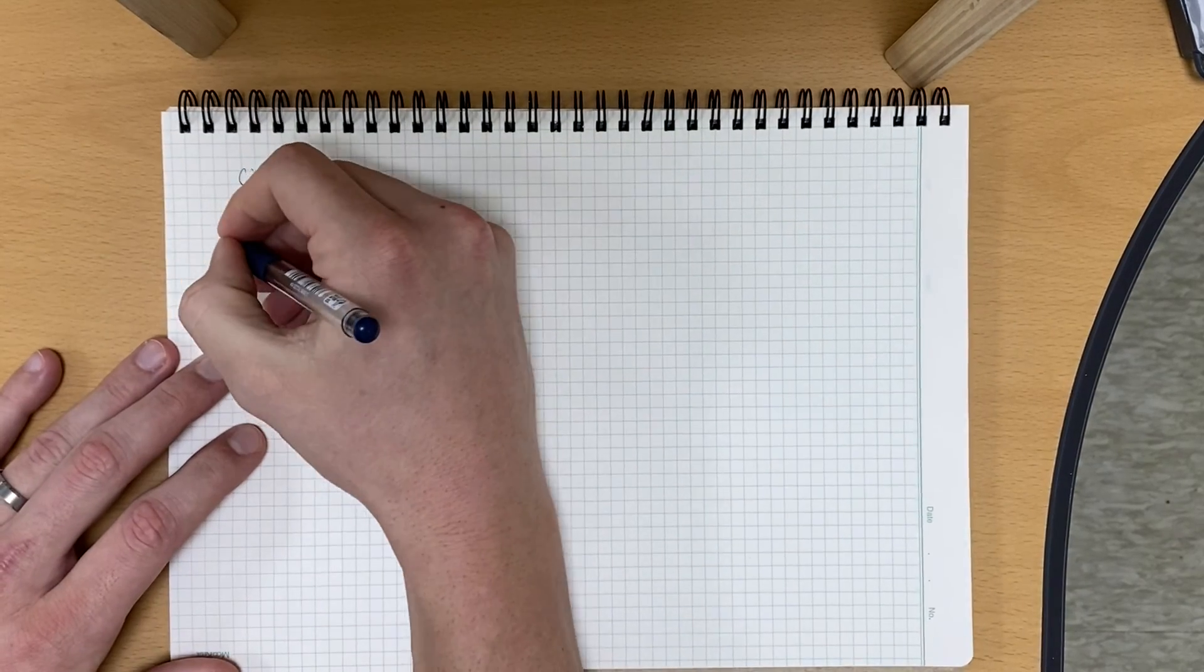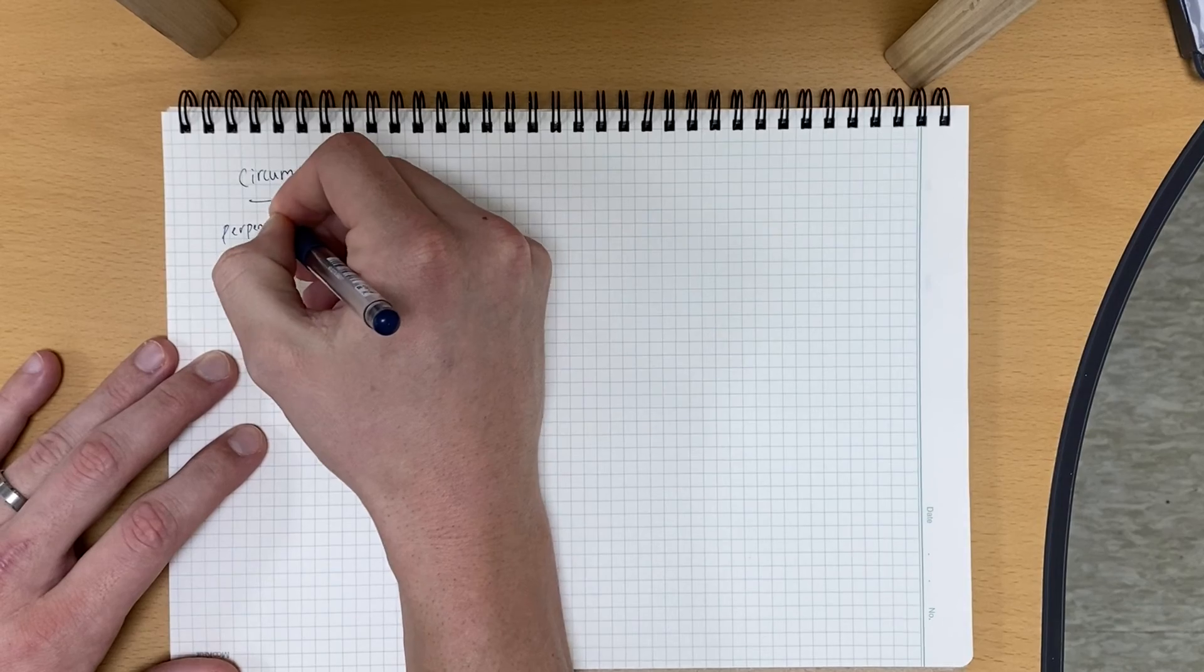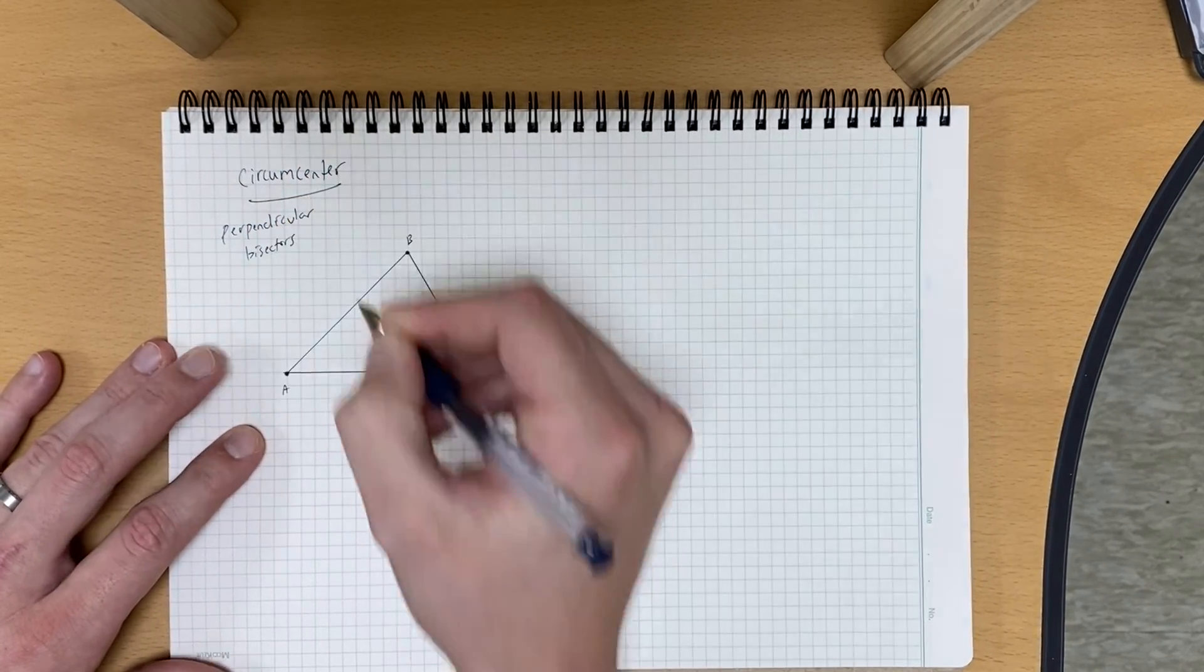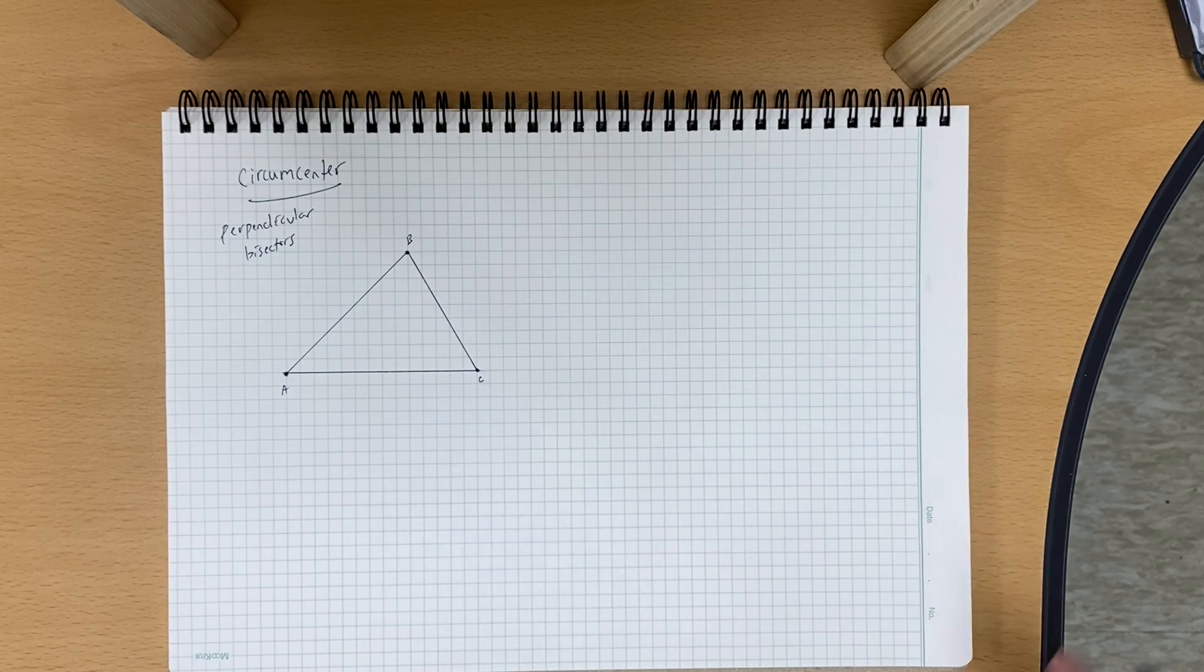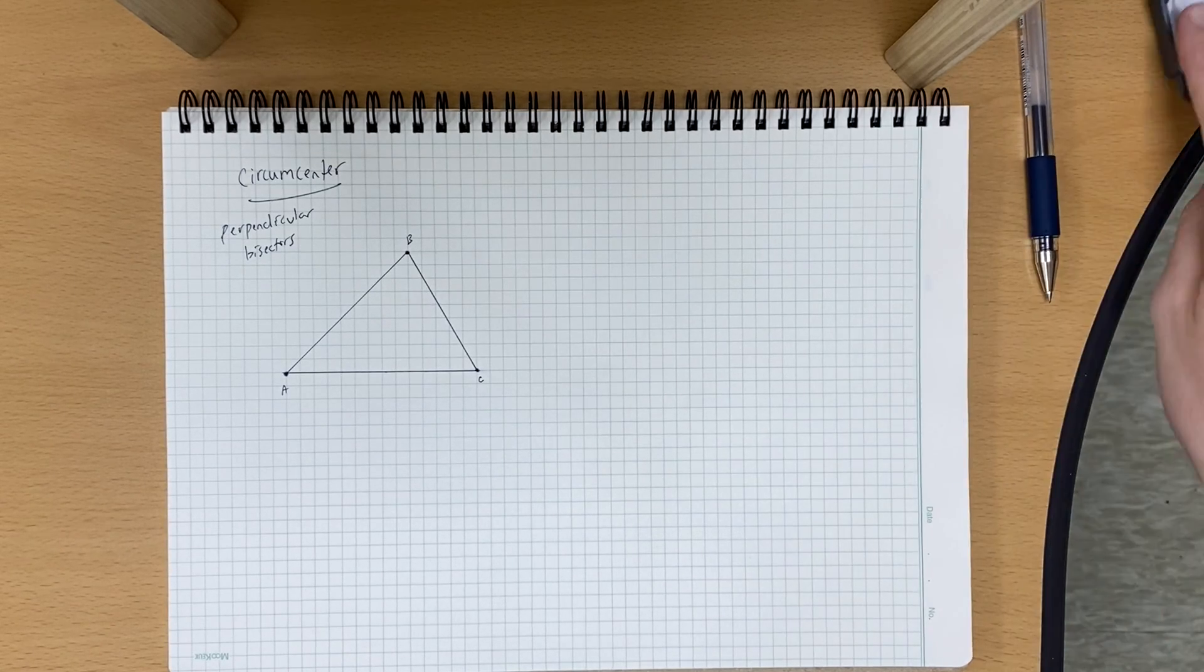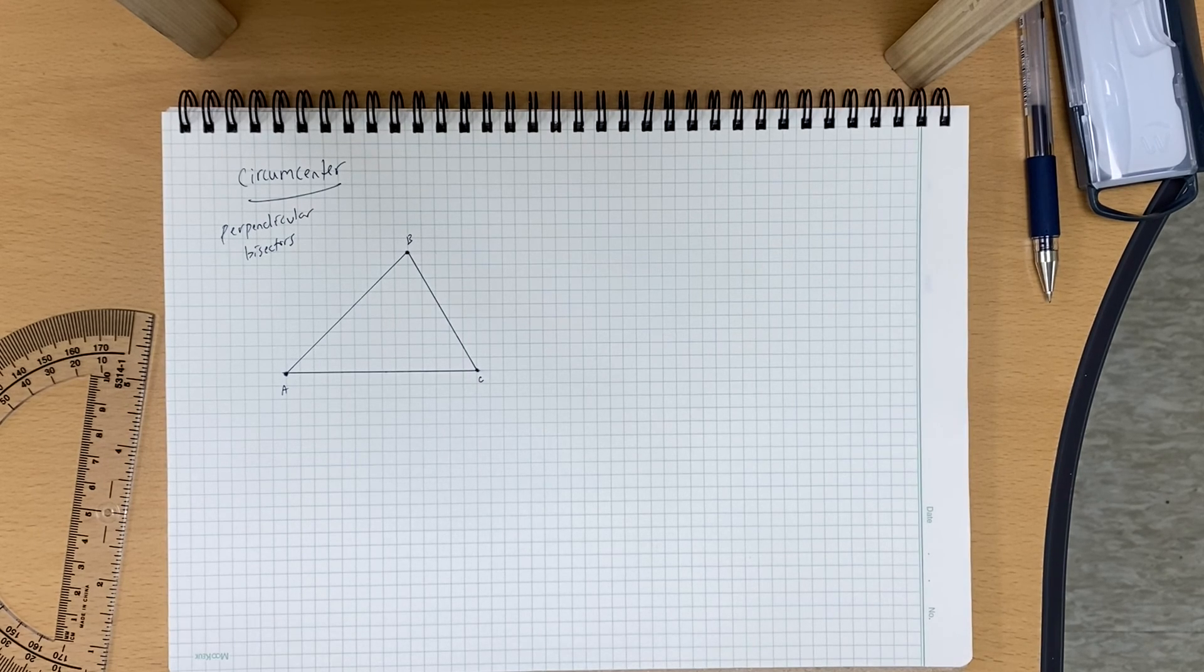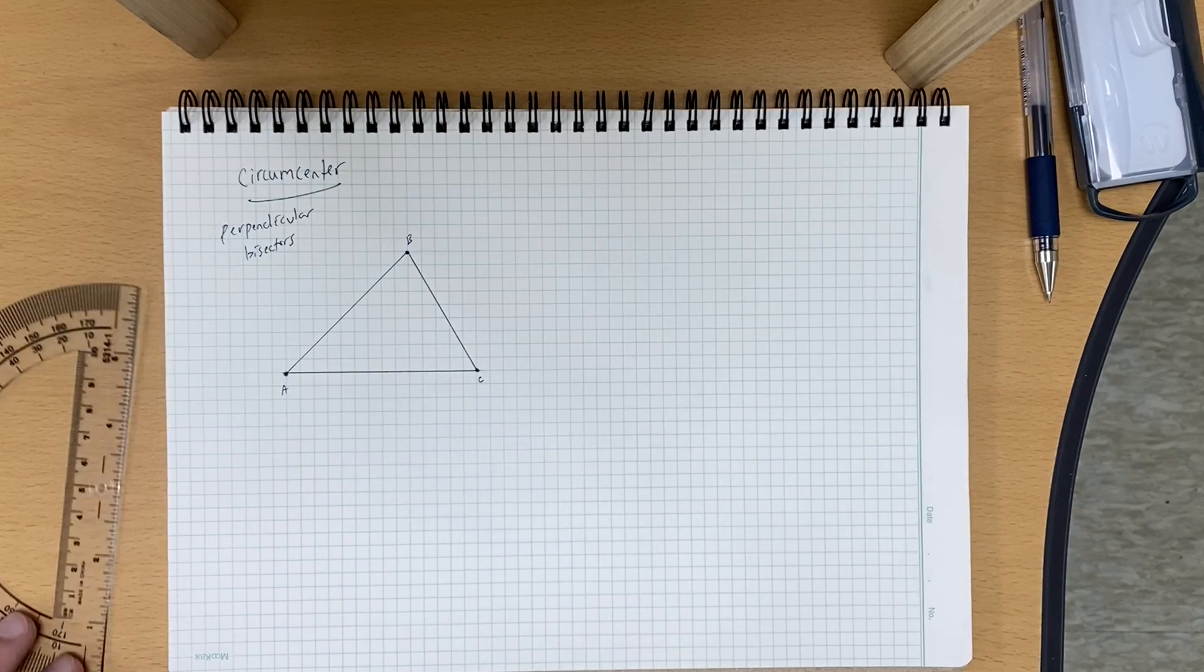All right, so for circumcenter, we are going to use perpendicular bisectors. And the circumcenter is going to be located at the point of concurrency or where our three perpendicular bisectors intersect. So we're going to be able to tell where they intersect after we do two, but we will do three.